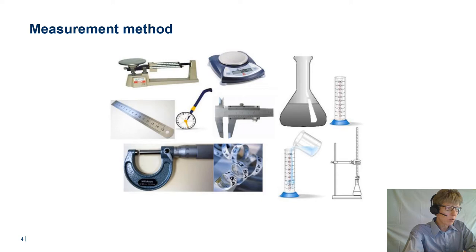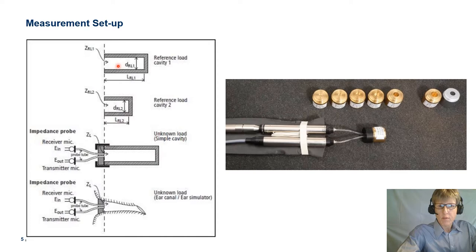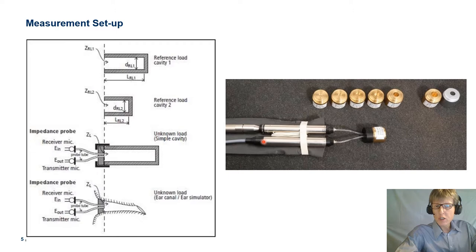As illustrated to the left, we have the known reference load cavity 1 and cavity 2. The impedance probe is in turn connected to reference load cavity 1, 2, and the unknown load — shown as a simple cavity and below as an ear canal or ear simulator. To the right, we see the impedance probe device in more detail, with the transmitter probe microphone and the receiver probe microphone connected using two thin tubes to the reference load via an airtight interface. We have a total of seven different reference load cavities, and to the right we see a more complex load, the IC7-11 coupler, which uses the same interface.